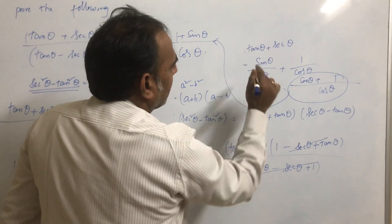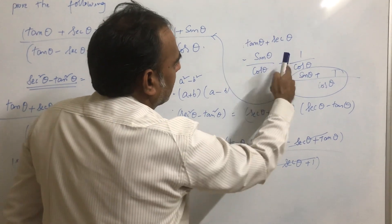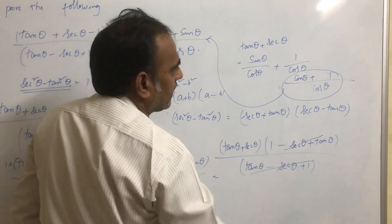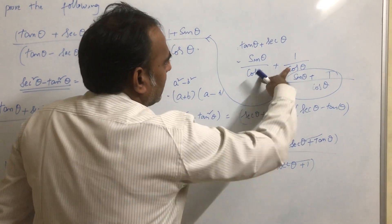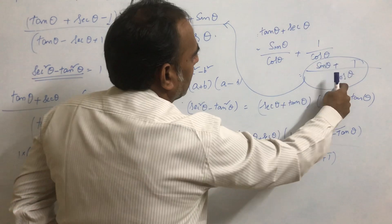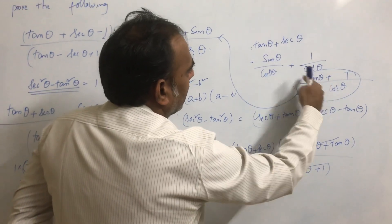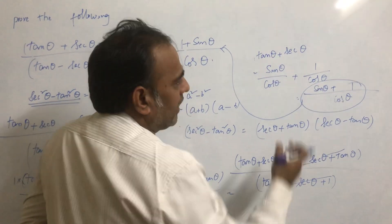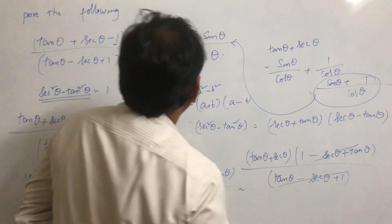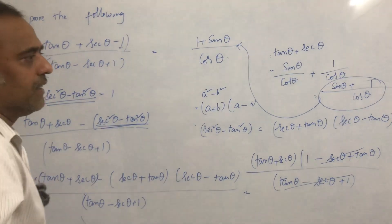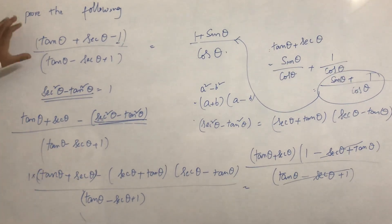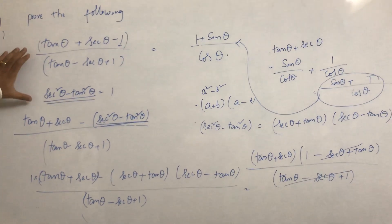Whatever remains is tan θ + sec θ. Writing tan θ as sin θ / cos θ and sec θ as 1 / cos θ, the denominator is cos θ in both terms. Adding the numerators gives (sin θ + 1) / cos θ, which is the RHS. This completes the proof.